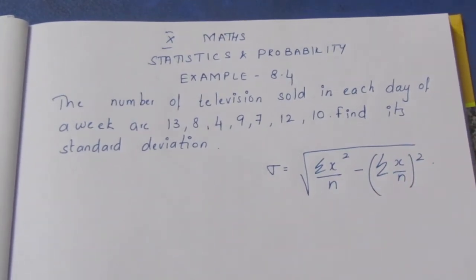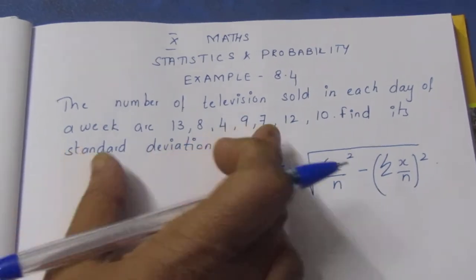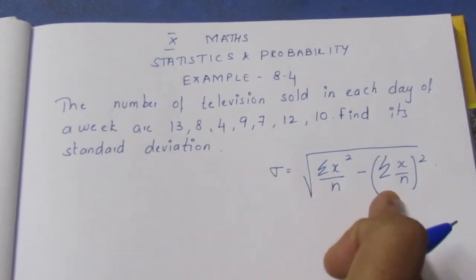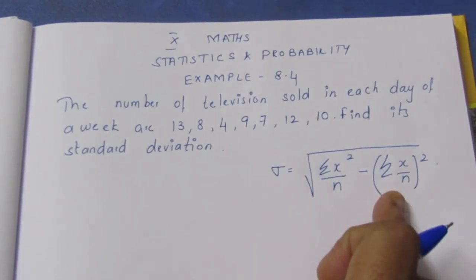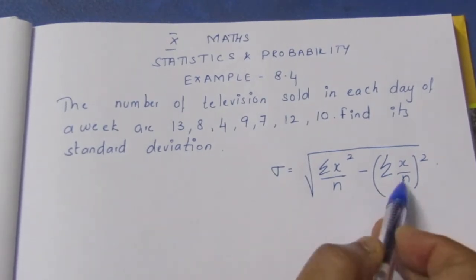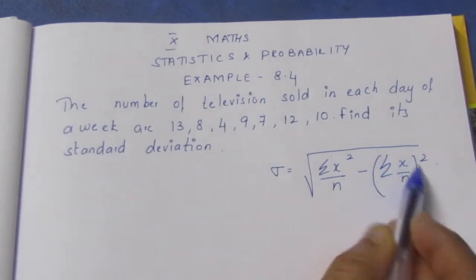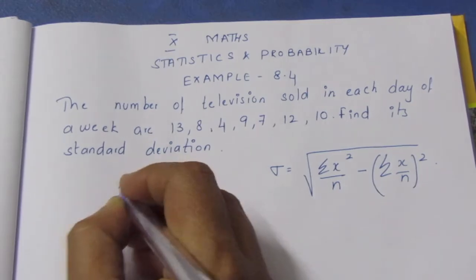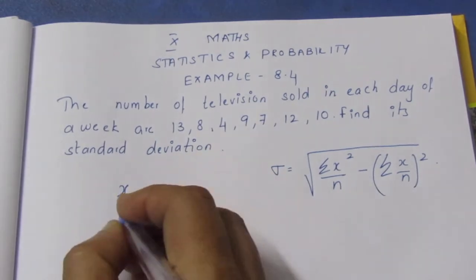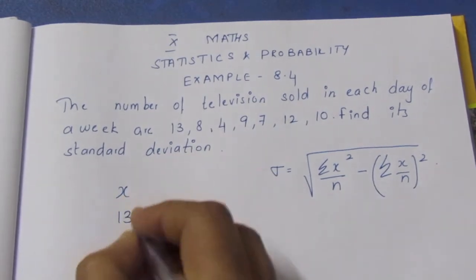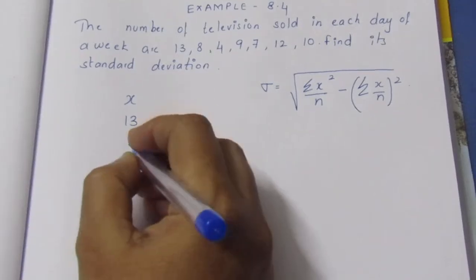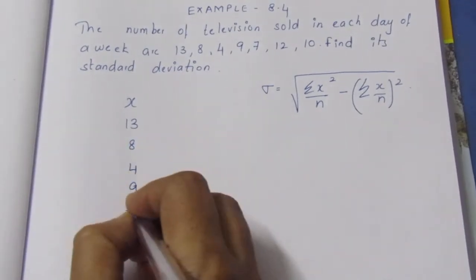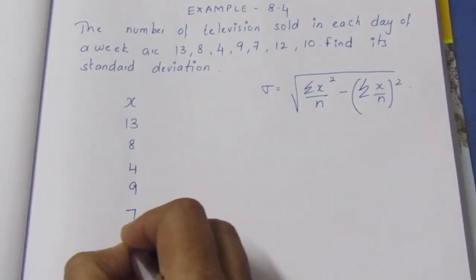We will set up the x column and x² column. First, we list the x values: 13, 8, 4, 9, 7, 12, 10. We will also find the mean, which is the summation total divided by the number of observations.